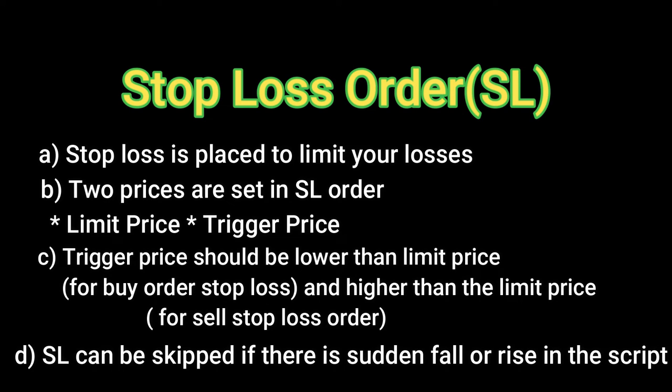The third type is the stop-loss order. Many traders are not aware of the difference between stop-loss and stop-loss market, so let's clear all doubts. Stop-loss is placed to limit your losses — this is my personal recommendation: always use stop-loss. Two prices are set in a stop-loss order: trigger price and limit price. The limit price is your stop-loss price. The moment the price touches the trigger price, a limit order at the limit price is placed. Because it is a limit order, the stop-loss can be skipped if there is a sudden fall or rise in the scrip.